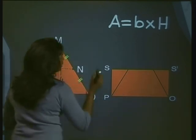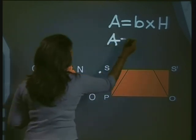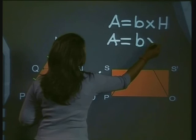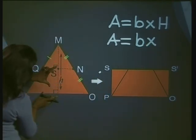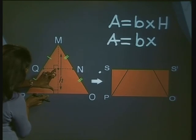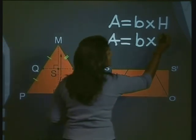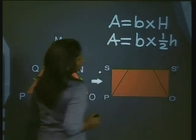So we can instead say that the area is equal to the base times—now the height of this side was half the height of the original triangle, so we can write this height as half small h. So the area of this triangle is area equals base times half the height of this height.